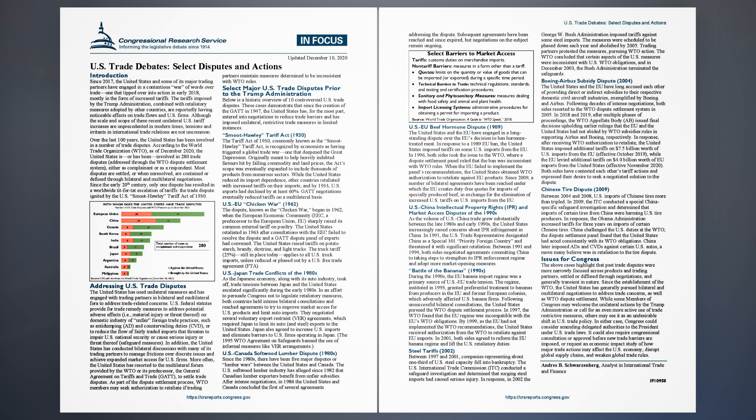Since 2017, the United States and some of its major trading partners have engaged in a contentious war of words over trade, one that tipped over into action in early 2018, mostly in the form of increased tariffs. The tariffs imposed by the Trump administration, combined with retaliatory measures adopted by other countries, are reportedly having noticeable effects on trade flows and U.S. firms. Although the scale and scope of these recent unilateral U.S. tariff increases are unprecedented in modern times, tensions and irritants in international trade relations are not uncommon.